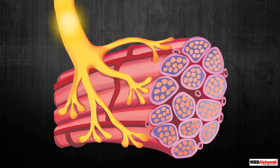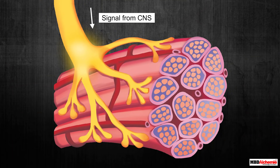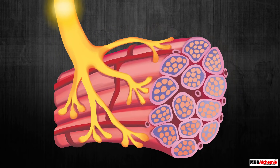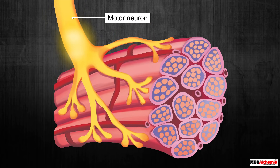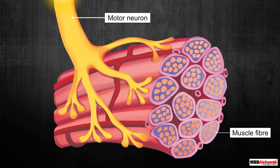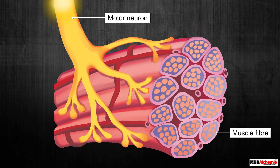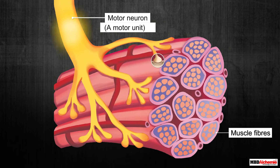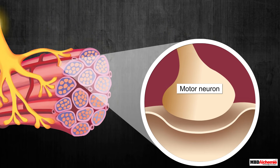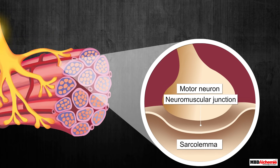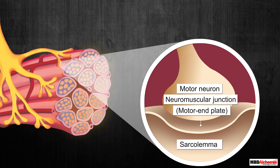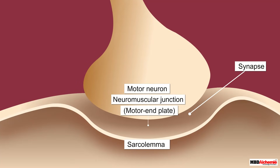The process of muscle contraction begins with a signal from the central nervous system (CNS). The signal is brought by motor neurons from the CNS. These motor neurons are connected to the muscle fibers. The motor neuron with which a muscle fiber connects is called a motor unit. The junction between the motor neuron and the sarcolemma of the muscle fiber is known as the neuromuscular junction, or the motor end plate.